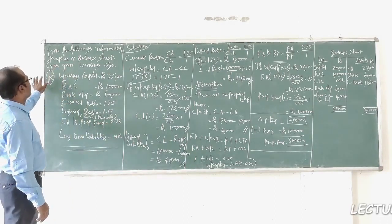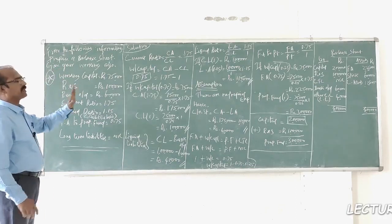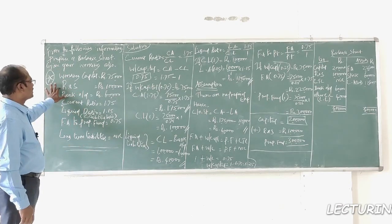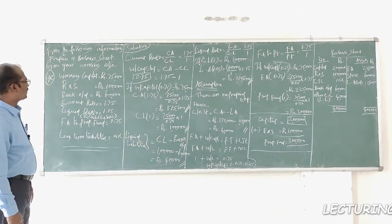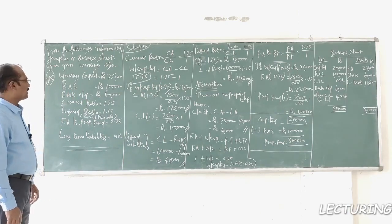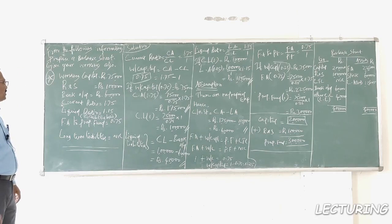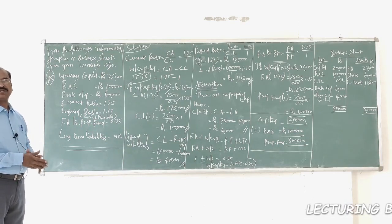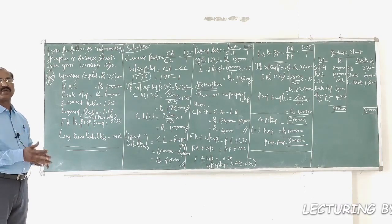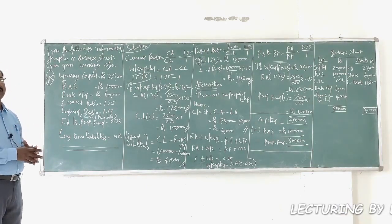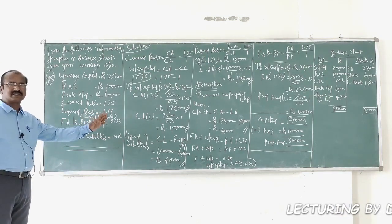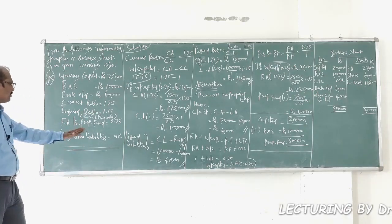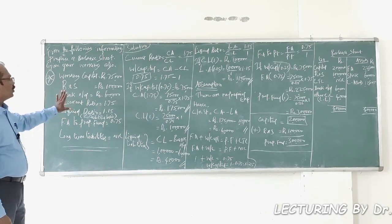From the following information, prepare a balance sheet and give your workings. Working capital = ₹75,000; Reserves and Surplus = ₹1,00,000; Bank Overdraft = ₹60,000; Current Ratio = 1.75 times; Liquid Ratio on the basis of current liabilities = 1.15. Normally, liquid ratio is calculated as liquid assets divided by liquid liabilities, but here we are asked to consider current liabilities as the basis. Fixed Assets to Proprietary Funds = 0.75 times; Long-term liabilities = nil.